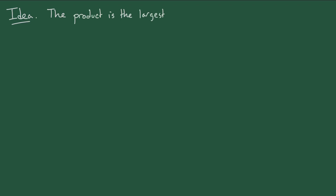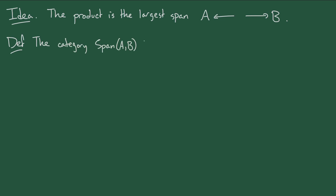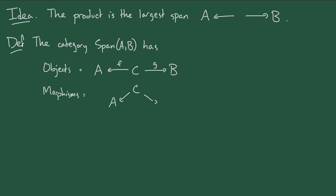Let's start with a warm-up idea. You might have seen before that the product is essentially the largest span from A to B. A span from A to B is just an object together with a map into A and a map into B. These form a category where the objects are just spans, and the morphisms between two spans are a morphism between the chosen objects that's compatible with — or that commutes with — the chosen morphisms into A and B.